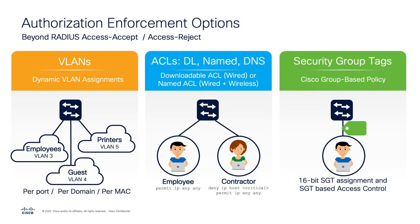Cisco's Identity Services Engine provides various mechanisms for applying security policies. Traditionally, organizations leverage VLANs to segment devices. Unfortunately, in industrial environments, devices are often statically IP-addressed, and the IP address is ultimately how these devices communicate, so modifying the VLAN on the fly realistically can't work. That's where additional functionality, like access control lists or downloadable access control lists, allows for dynamically authorizing and providing access to those devices.